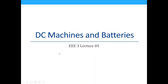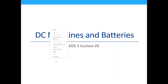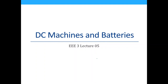Welcome everyone, hello. Welcome to the fifth lecture of EEE3. In this lecture, we're going to be talking about DC machines and batteries. They're just an additional circuit element aside from your basic voltage source, current source, and your resistor.